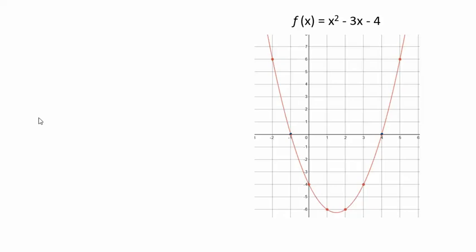Alright, so now the next thing we want to look at is how could I solve using a graph. So let's say I want to solve... Let's go back and look at that one that we did. We did negative 4 equals x squared minus 3x minus 4. We already did this one with the table. But how could you do it with the graph?